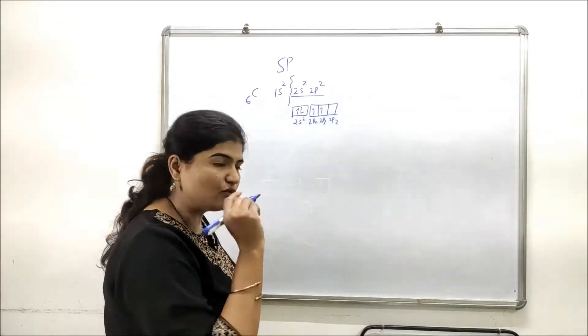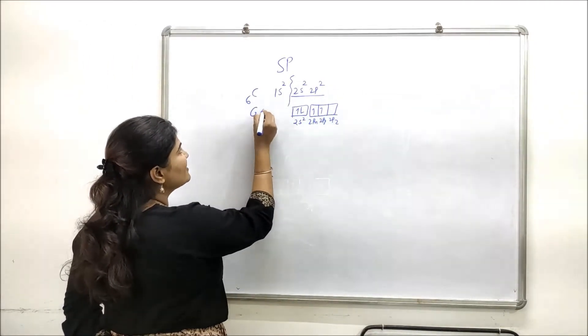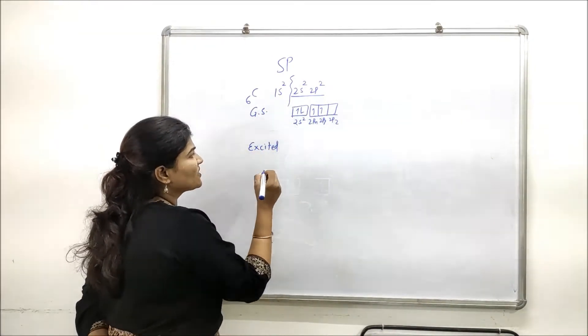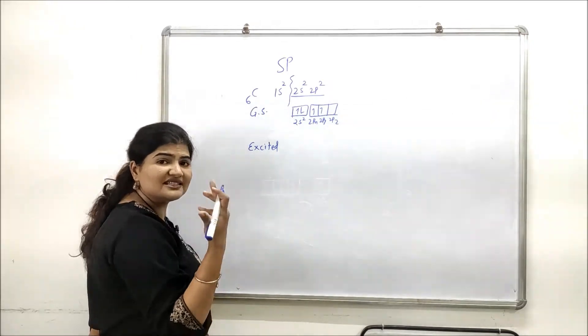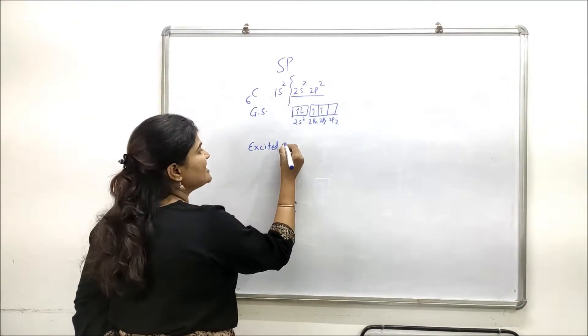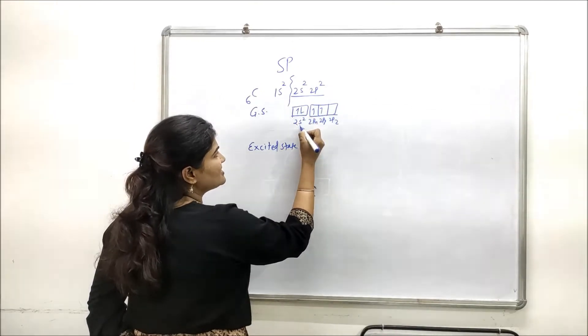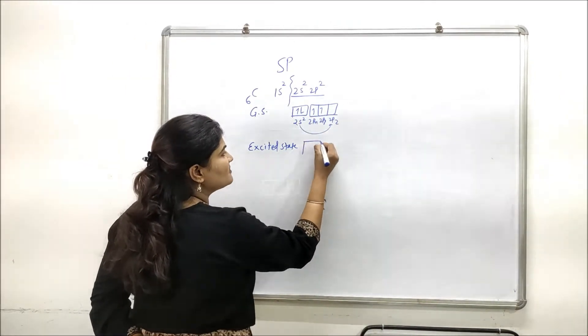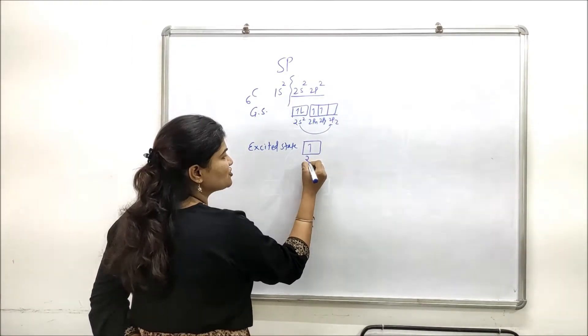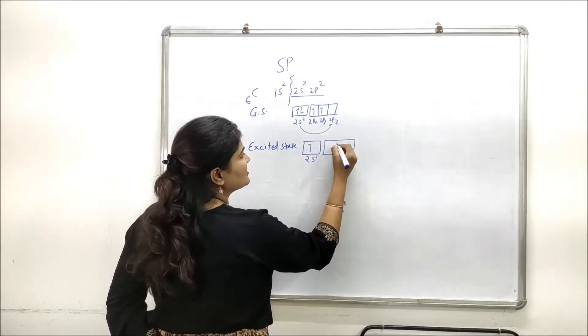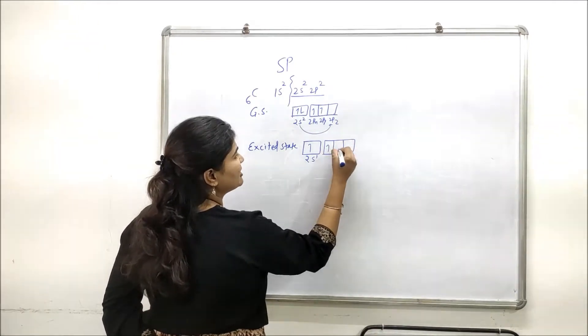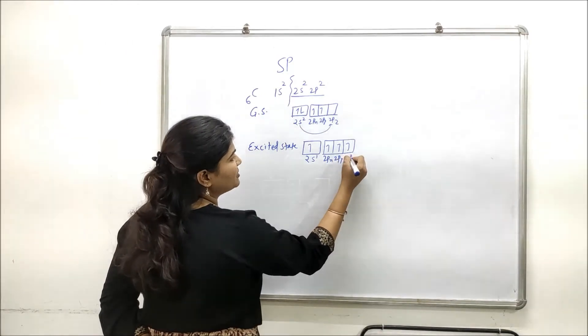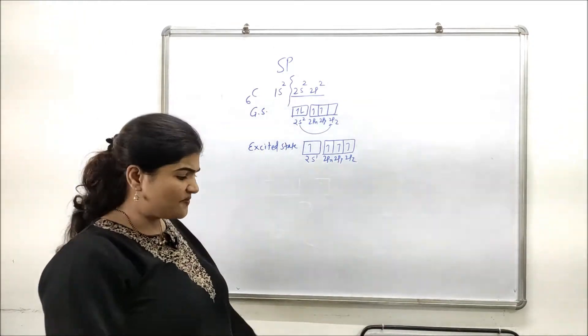Now let's talk about excited state, because carbon doesn't form bonds in its ground state. It goes to excited state where one of the 2s electrons is promoted to empty 2pz to form something like this. Now one electron remains in 2s and in 2p there are three unpaired electrons: 2px, 2py, and 2pz. This is the excited state.